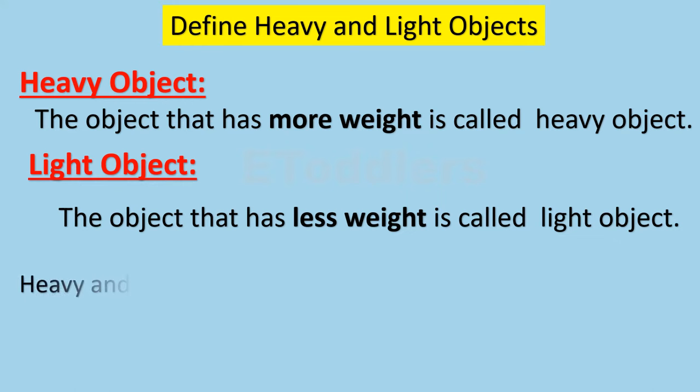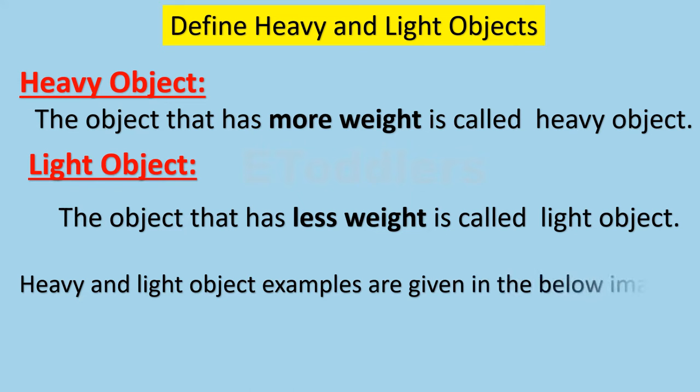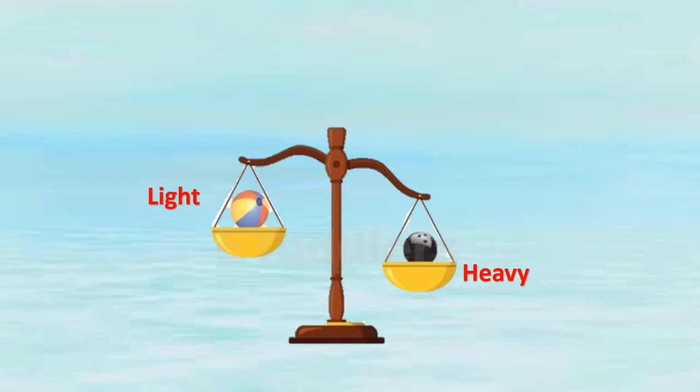Heavy and light object examples are given in the below image. In a weighing balance, the heavy weight side goes down and the light weight side goes up.